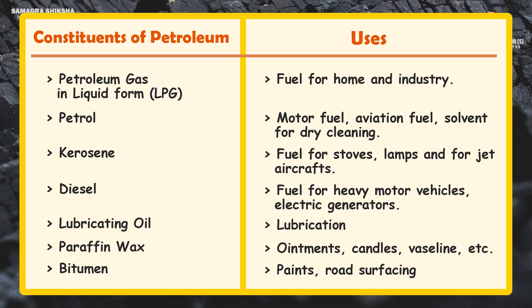Petrol is very common. It is used as fuel for automobiles and as a solvent for dry cleaning. Diesel is used as fuel for heavy motor vehicles and generators. Lubricating oil is used as engine oil. Paraffin wax is used to make candles.